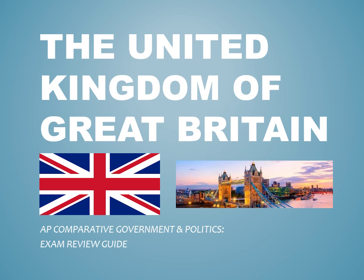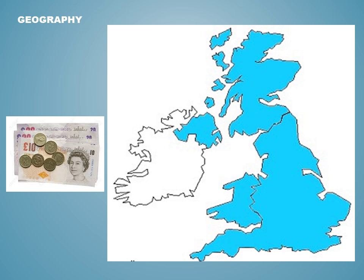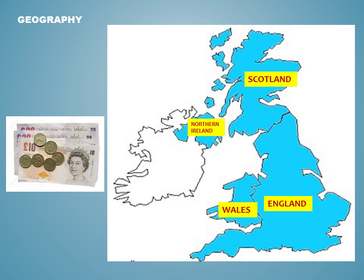Let's take a quick look back at the key points you need to know about the United Kingdom of Great Britain. The United Kingdom is a political and economic union that consists of four member countries, including England, Wales, Scotland, and Northern Ireland. Its form of currency is the pound.